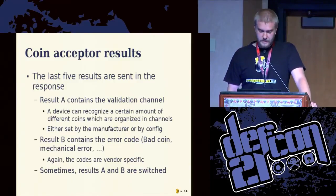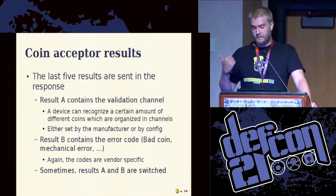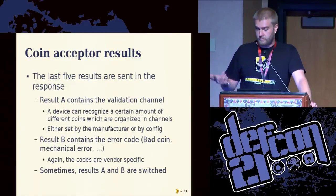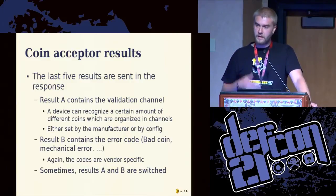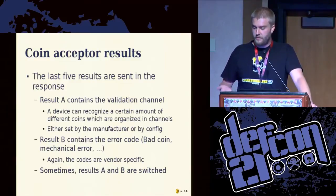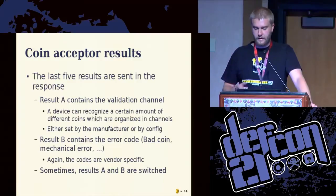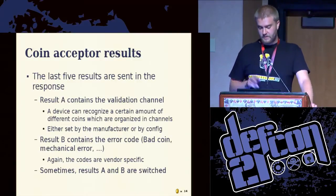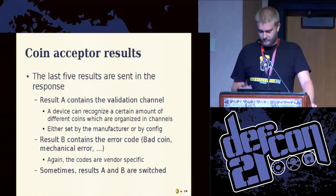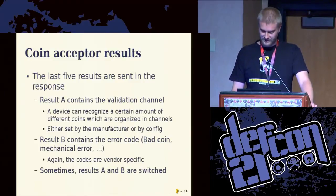The second byte contains the error code — if it's a bad coin, if there was an error recognizing the coin, or if the coin was accepted. The problem is that all these codes are vendor specific, so different coin acceptors won't have the same error codes. And sometimes the two bytes are even swapped, so you really need the documentation or you will have a lot of trouble.